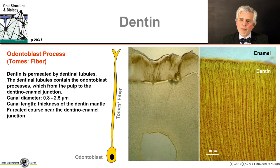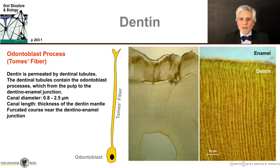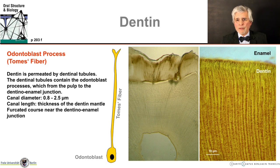One more thing is important here — pay close attention to the naming. The odontoblast processes are also called Tomes fibers, but must not be confused with the Tomes process, which is the secretory end of the ameloblast. So Dr. Tomes has immortalized himself in both of these structures.